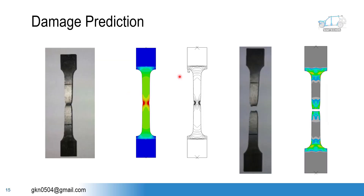Let's see — here we have a few examples. This is the experimental case considered from one research paper. With the appropriate boundary conditions — generally we apply the load as a displacement, and the displacement should be sufficient enough to generate the fracture strain — with the appropriate boundary condition and the fracture strain value, we can replicate such experimental behavior within our simulation.